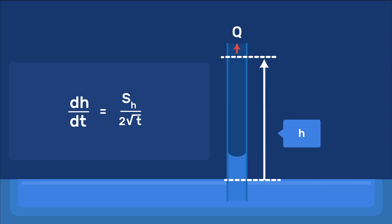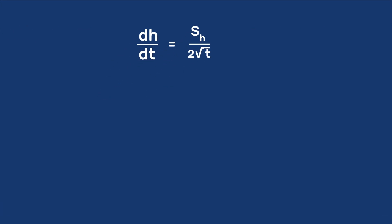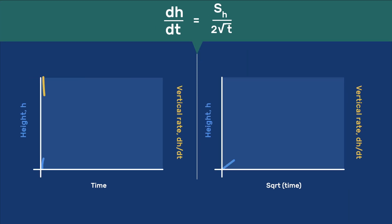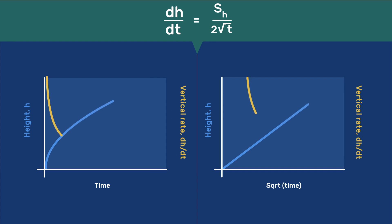The derivative of the liquid height versus time gives its rate of vertical rise. This rate varies with the inverse of the square root of time. It therefore decreases over time, and this is because the pore length, causing viscous resistance to fluid flow, increases.